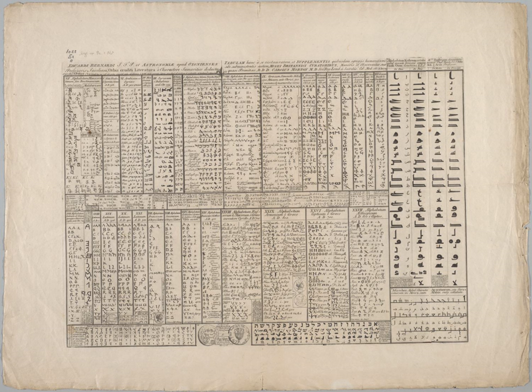The largest segmental script is probably an abugida, Devanagari. When written in Devanagari, Vedic Sanskrit has an alphabet of 53 letters, including the Visarga mark for final aspiration and special letters for Ksh and Jña, though one of the letters is theoretical and not actually used. The Hindi alphabet must represent both Sanskrit and modern vocabulary, and so has been expanded to 58 with additional letters to represent sounds from Persian and English. Thai has a total of 59 symbols, consisting of 44 consonants, 13 vowels, and 2 syllabics, not including 4 diacritics for tone marks and 1 for vowel length. The largest known abjad is Sindhi, with 51 letters. The largest alphabets in the narrow sense include Kabardian and Abkhaz for Cyrillic, with 58 and 56 letters respectively, and Slovak with 46.